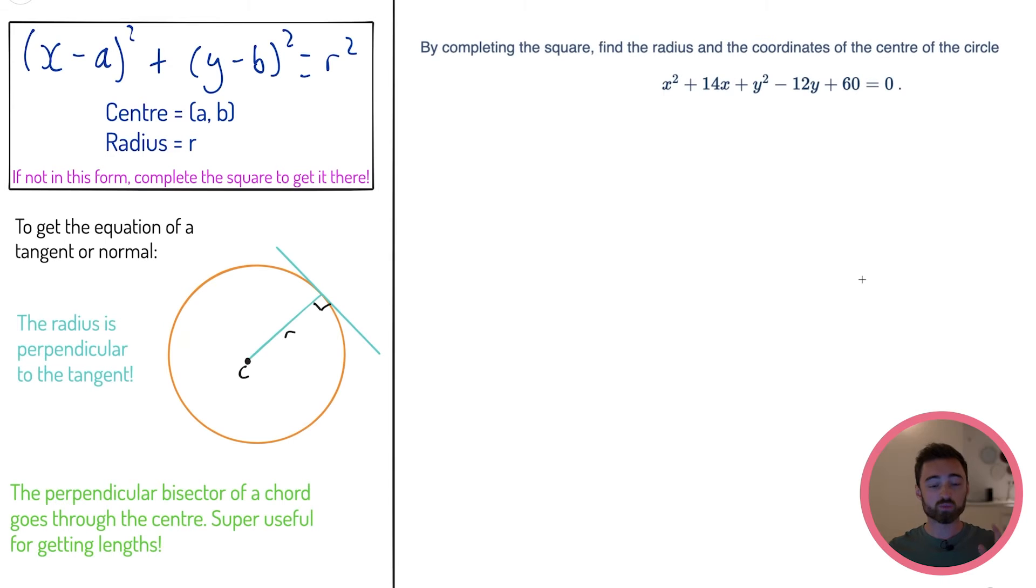Another episode of 10-Minute Topic Revision and we might as well pick up where we left off. So last time we did lines, the first half of year 12 coordinate geometry. The second half of it is circles, so I thought I might as well do that today. There are a few things that I want you to think about with circles, a few things to look out for.